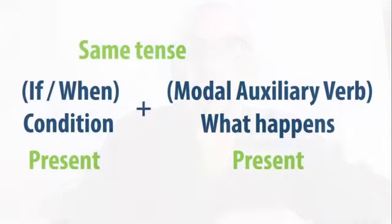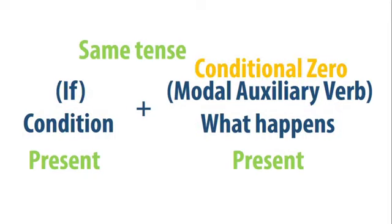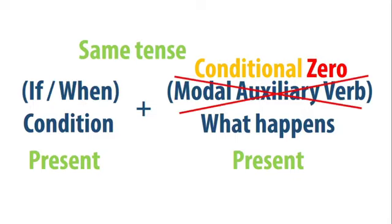In the if part and in the modal auxiliary verb part, you use the same tense. Let's begin with conditional zero. In this case, the same tense you're going to use is present and present. But since you're talking about conditional zero, you are not going to use any modal auxiliary verb.